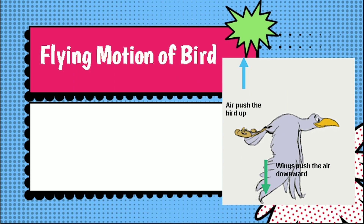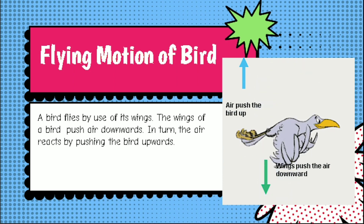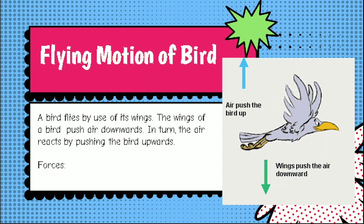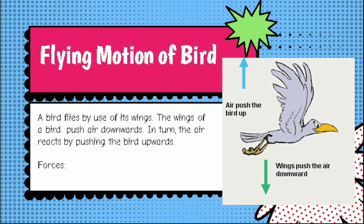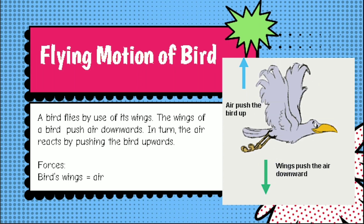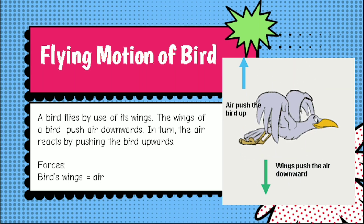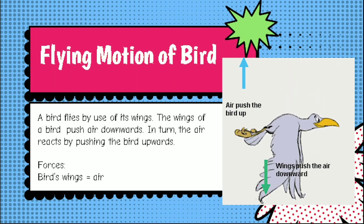Flying motion of a bird: a bird flies by use of its wings. The wings of a bird push air downwards. In turn, the air reacts by pushing the bird upwards. The size of the force on the air equals the size of the force on the bird. The direction of the force on the air, which is downwards, is opposite the direction of the force on the bird, which is upwards. Action-reaction force pairs make it possible for birds to fly. The forces of the wings and the air are equal but in opposite directions.